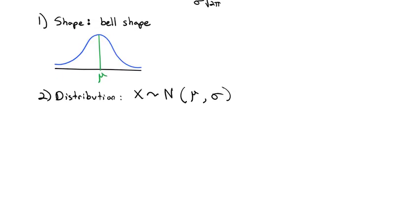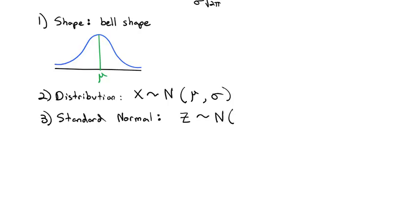There is one special distribution which we call the standard normal distribution. When dealing with the standard normal, we won't use x, we'll use z, so we know we're talking about the standard normal distribution, which always has a mean of zero and a standard deviation of one.